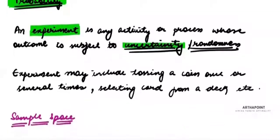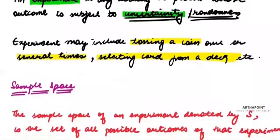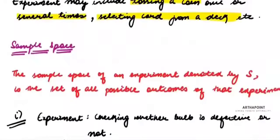To give you examples: tossing a coin once or several times, selecting cards from a deck, throwing a dice, raining or not raining — all of these are experiments. Now, we want to understand what is a sample space.